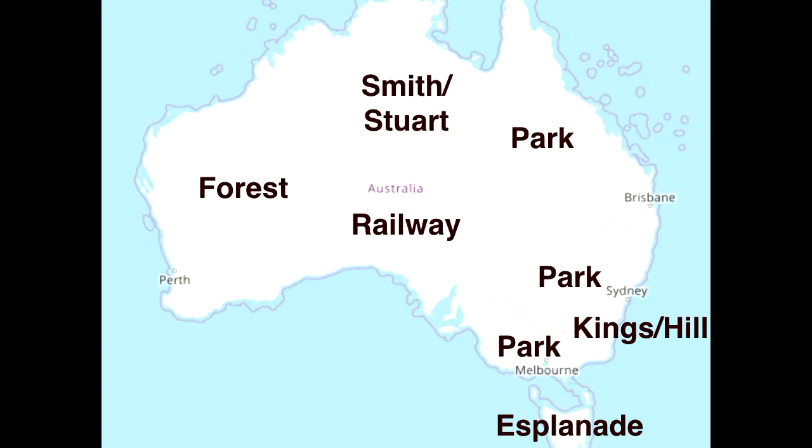To finish up, this is what the most common street names in each state were. Park really dominates the eastern seaboard. Adelaide, Canberra, and Northern Territory all had ties — only four or so streets each with those names. What was really interesting: Esplanade. There are lots of Esplanades in Tasmania — not 'Esplanade Street' or anything, just streets called Esplanade. I had no idea — I thought there was a bug in my code. I had to get Google Maps out and look at all the street names in Tasmania.